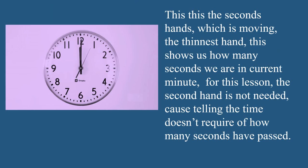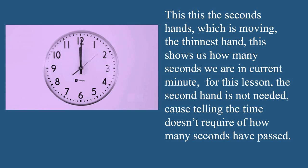Students, now you can see the picture of the clock. In the clock, which hand is moving here? The second hand — that is called the second hand. So which is moving — the thinnest hand? This shows us how many seconds we are into the current minute. For this lesson, the second hand is not needed because telling the time doesn't require knowing how many seconds have passed. But sometimes, the second hand is also important.